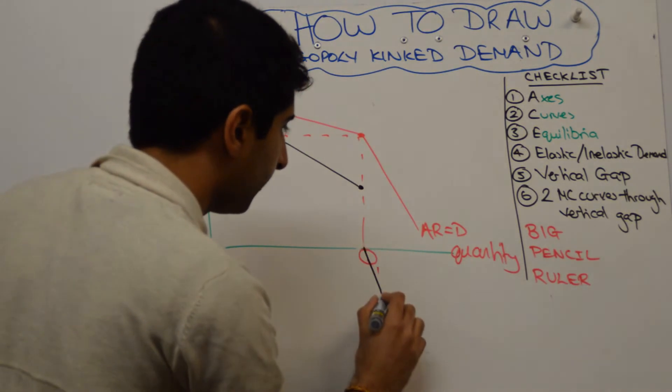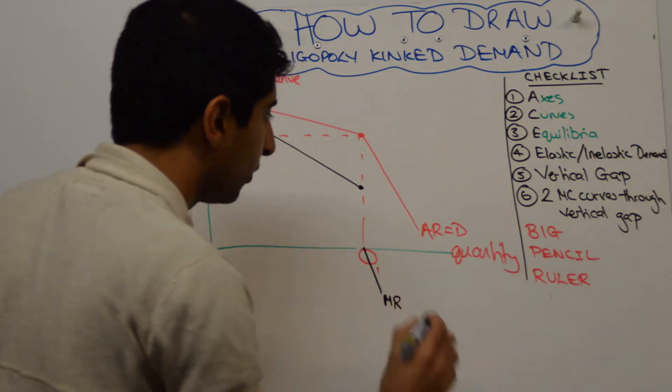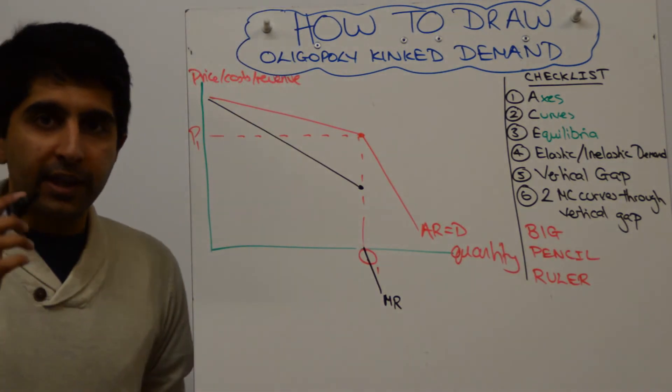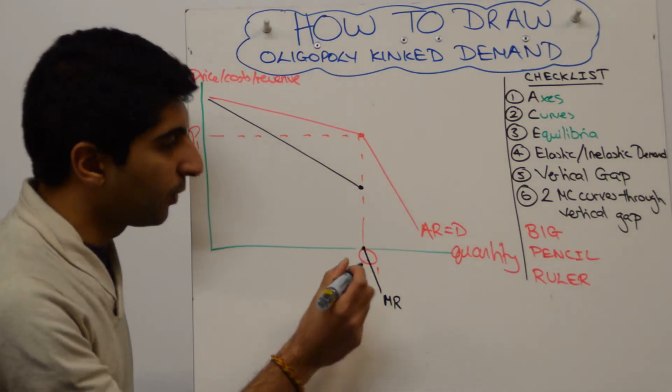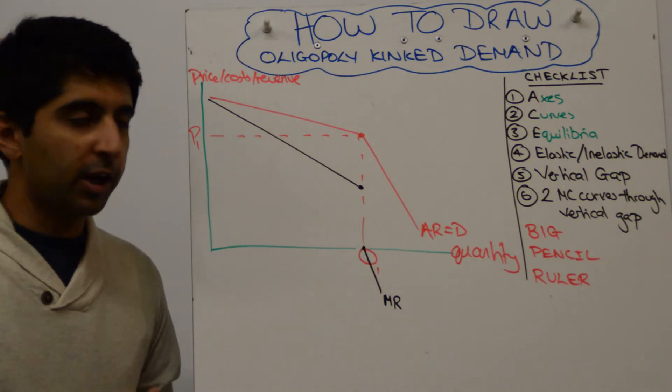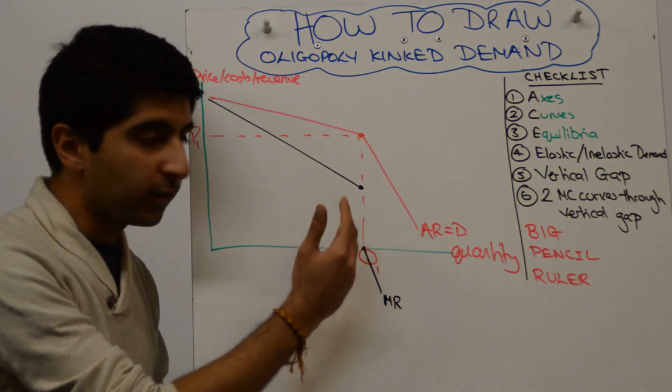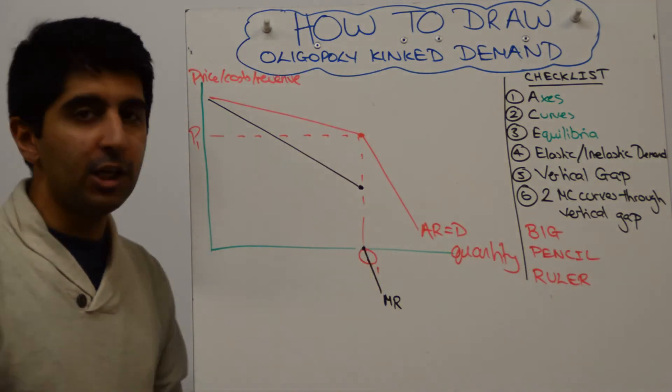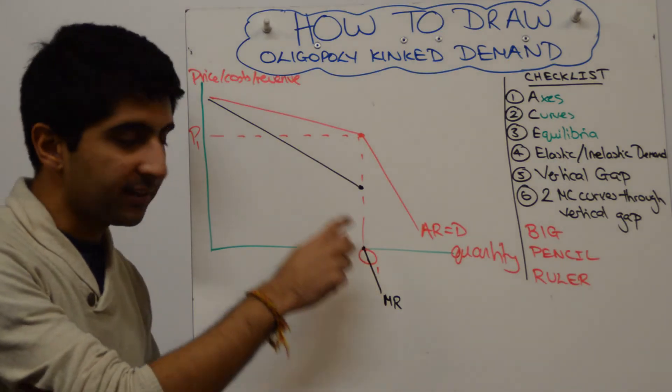So being pedantic, your marginal revenue curve is going to be twice as steep looking something like that. The key thing you're doing is leaving that vertical gap, alright? So you stop with the first part of the MR curve at Q1, leave a vertical gap and then continue with the MR curve at the x-axis and going beyond.